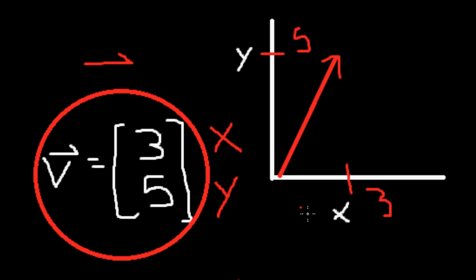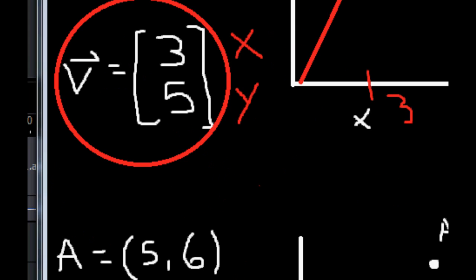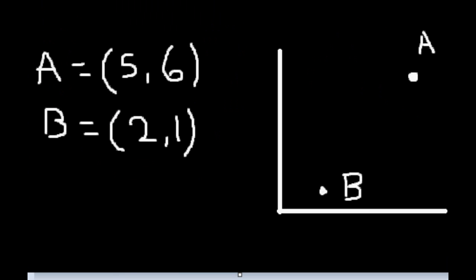It is important to keep in mind that there is more than one geometric interpretation of a vector. Consider two points, A and B. Point A is located at (5, 6), while B is located at (2, 1). Now the same vector v that represented the point (3, 5) now represents the distance between the two points A and B. We can see this by subtracting the two components: 5 minus 2 equals 3, and 6 minus 1 is equal to 5.